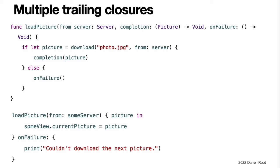If a function takes multiple closures, you omit the argument label for the first trailing closure and you label the remaining trailing closures. For example, this function loads a picture for a photo gallery. When you call this function to load a picture, you provide two closures. The first closure is a completion handler that displays a picture after a successful download. The second closure is an error handler that displays an error to the user. In this example, the load picture from completion on failure function dispatches its network task into the background and calls one of the two completion handlers when the network task finishes. Writing the function this way lets you cleanly separate the code that is responsible for handling a network failure from the code that updates the user interface after a successful download, instead of using just one closure that handles both circumstances.